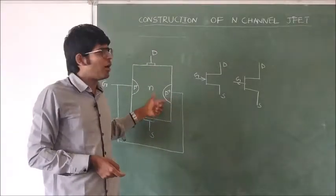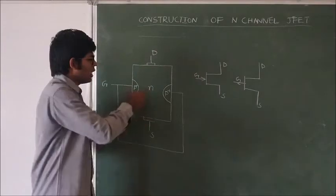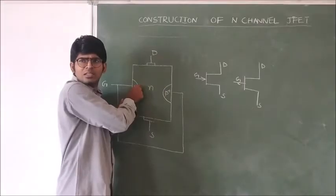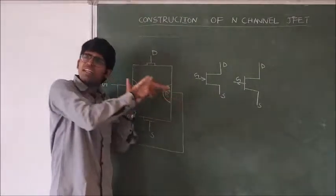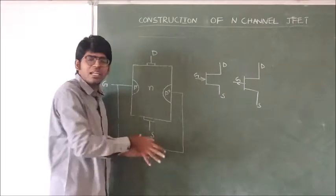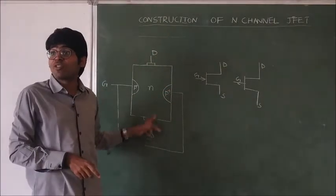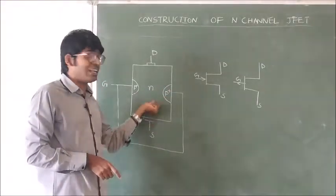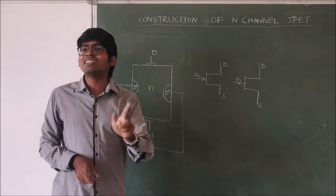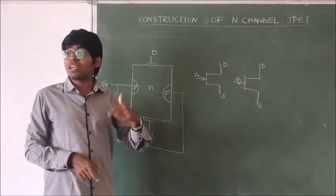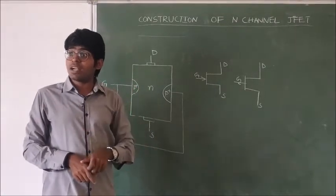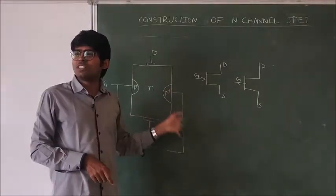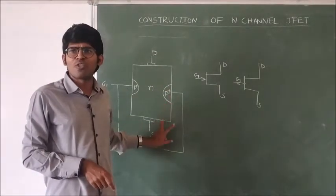Now, what is this N-channel? The two P-plus regions form two P-N junctions, and these two P-N junctions create two depletion regions. The space between these two depletion regions, through which the majority carriers travel from source to drain, is called the channel. Because this space is an N-type semiconductor, it is called an N-channel. If the middle semiconductor were P-type with N-plus surrounding regions, it would be called a P-channel JFET.